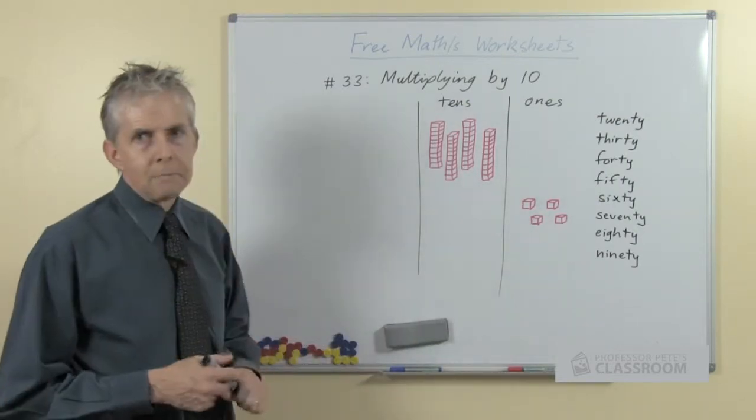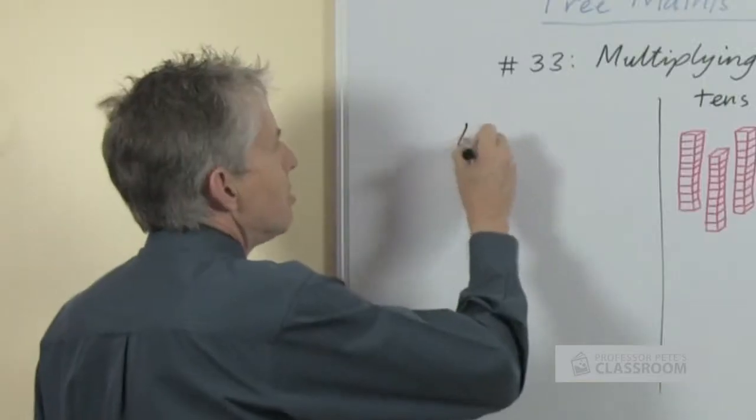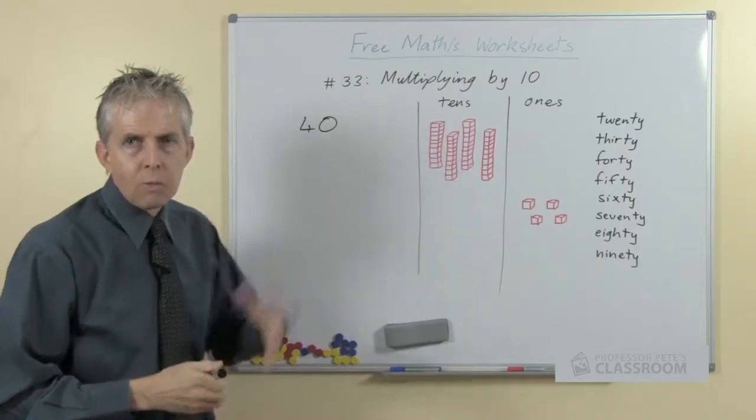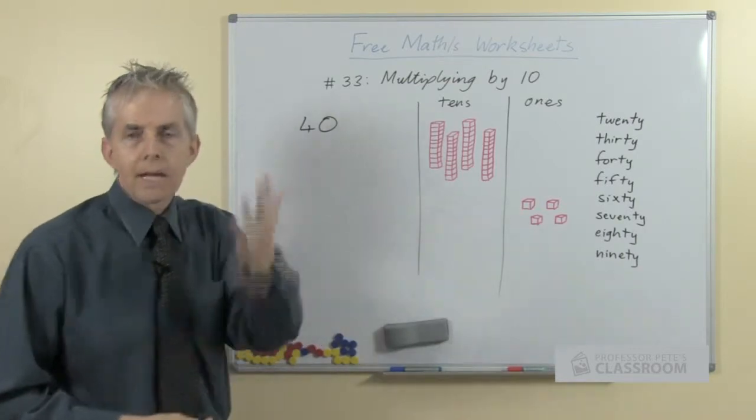I want to deal with a recommendation early on: we don't say to students just add a zero. When we're multiplying a number like 4 by 10, don't say add a zero.